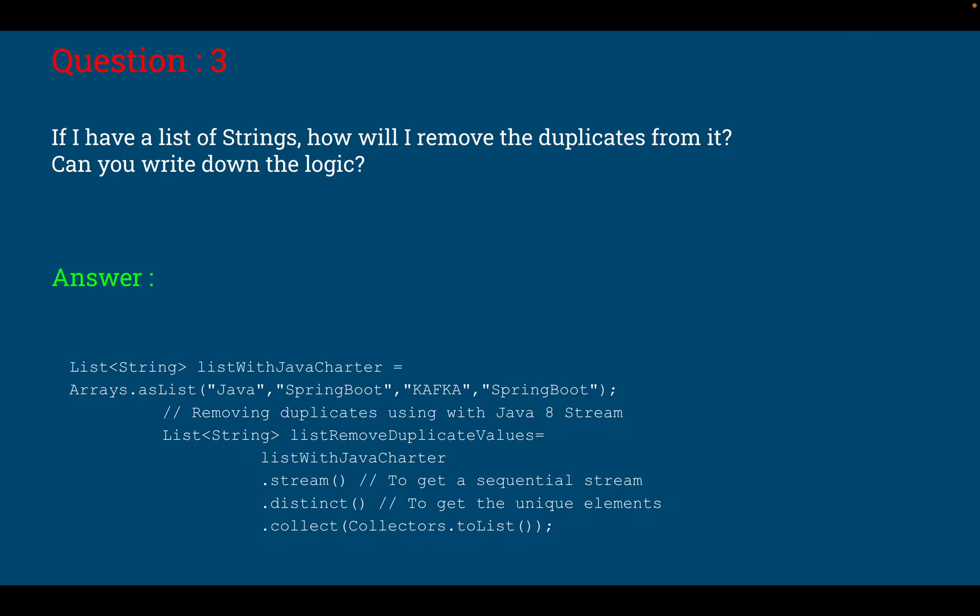Let's say if I have a list with some values, Java 8 code - you can see the list has a duplicate called Spring Boot. So what we can do is we can use the stream on the list to get the sequential stream. Then we can use the distinct function, which is an intermediate operation to get the unique elements. And finally the terminal operation using dot collect, collectors dot to list. Using this we can remove the duplicates in Java.